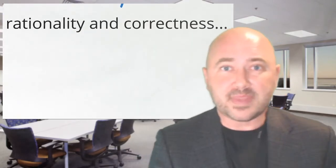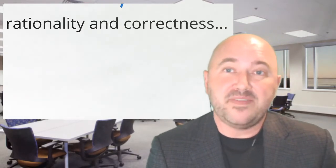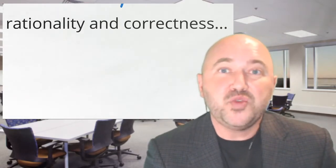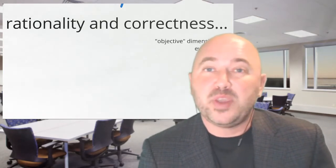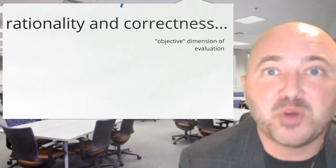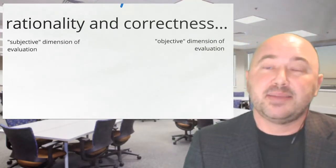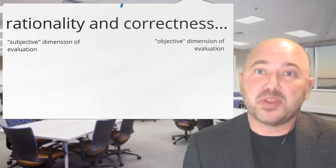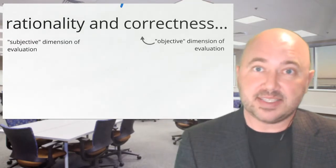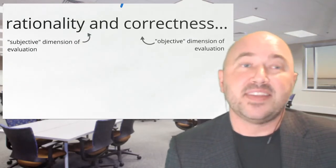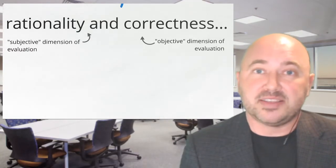The orthodox picture I start with and want to defend begins with the idea that there are two important modes of evaluation we use to assess actions or choices. We can be interested in both an objective mode of assessment or a subjective mode of assessment. The objective mode is naturally paired with words like 'correct' or 'ought' in the objective sense, and the subjective mode with talk about what's rational or what somebody subjectively ought to do.